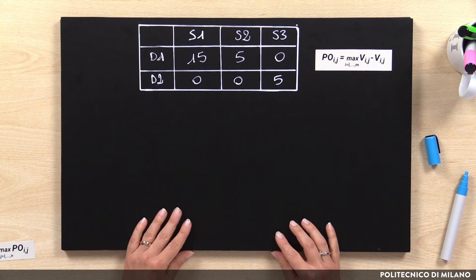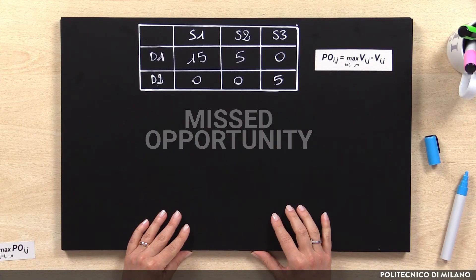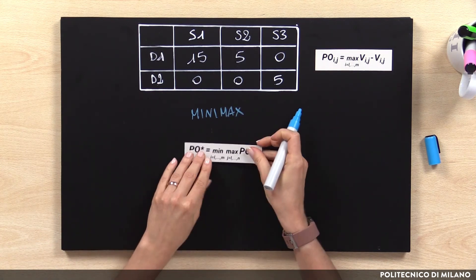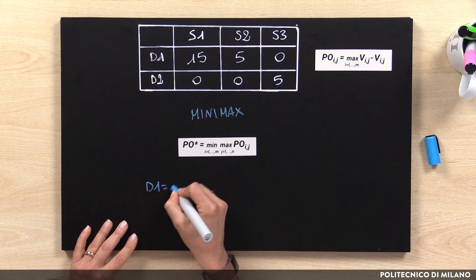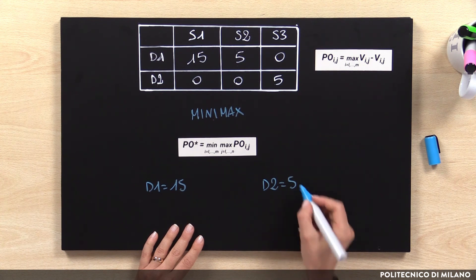Finally, as in the case of risk, we could also look for a solution through the method of missed opportunity. The missed opportunity is the value lost in case one scenario happens but the decision maker took the wrong decision. The criterion used with this new payoff table is called the Minimax or Regret criterion. As with the Maximin, this is mainly a pessimistic or prudent criterion. The decision for this method is the one that minimizes the loss in case the worst scenario happens. In our example, for D1 the worst option is 15, whereas for D2 it is 5. In this case, the decision maker prefers D2.